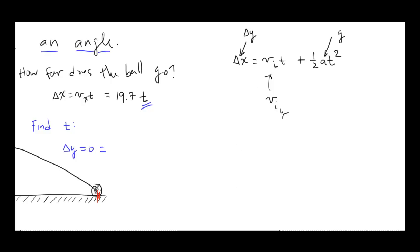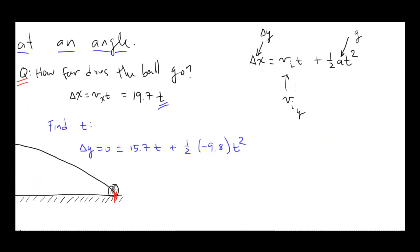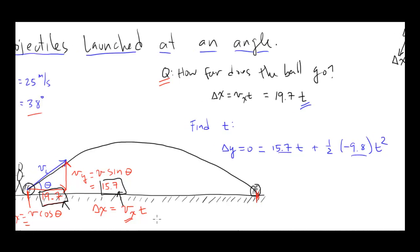I'm going to say delta y equals zero, and this zero is equal to the v initial in the y direction. What did we find that was? That was 15.7. So zero equals 15.7 t plus one-half, negative 9.8 times t squared. I've just used this equation. The v initial is 15.7, the acceleration is negative 9.8, and the delta y is zero. Remember, the delta y is zero because it begins and ends on the ground.